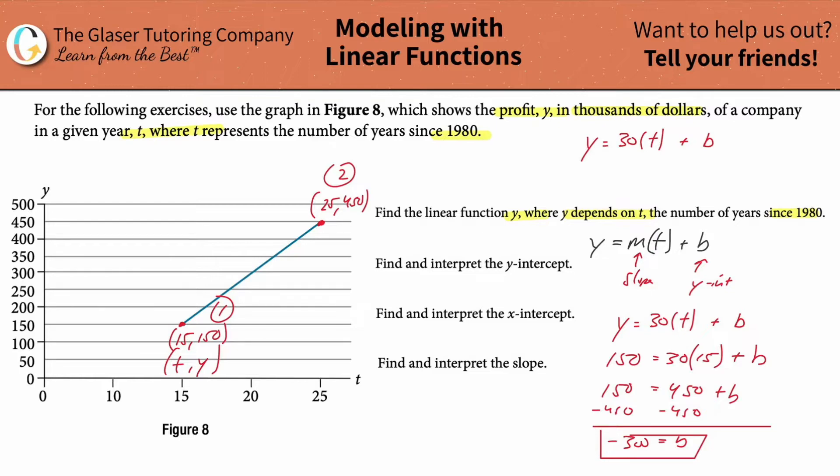So the Y-intercept here is negative 300. So now I can go back up to my linear model. I can get rid of that B essentially, and now I can plug it in with a known. So it's going to be minus 300 because it's a negative 300.